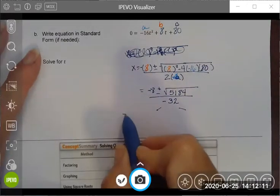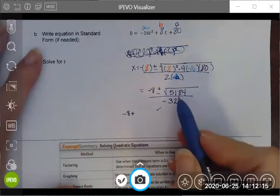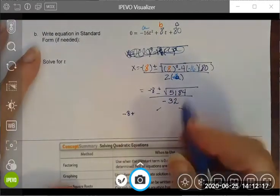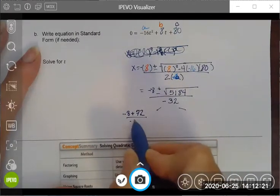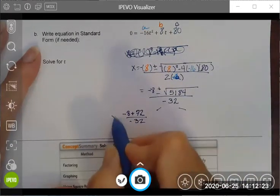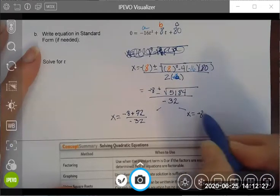I'm going to look at the first one, which is the positive square root of 5,184, which folks comes out to be 72. Wasn't that convenient? Divided by negative 32.